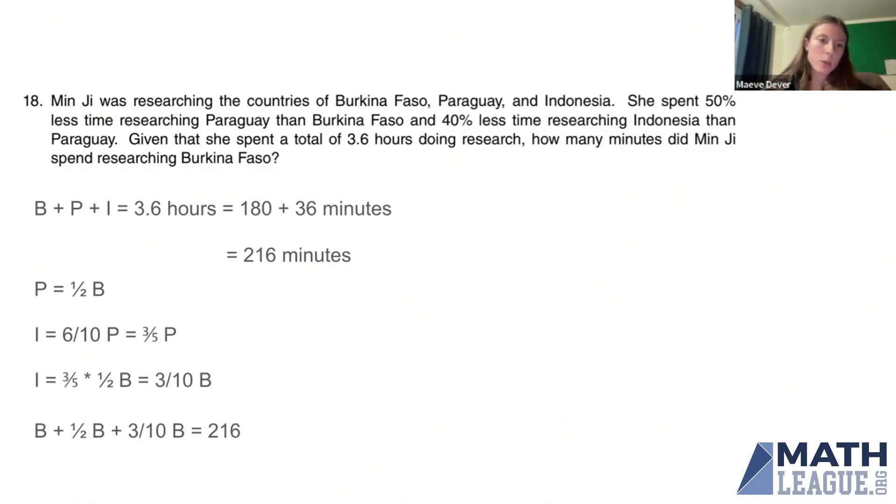So B, and then P is 1 half B, so we replace that. And then I is 3 tenths B, so we replace that. And those add up to 216.